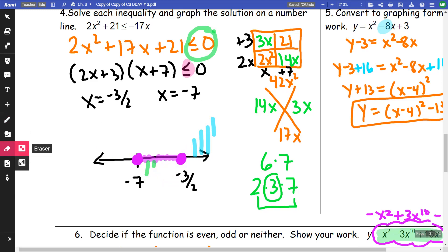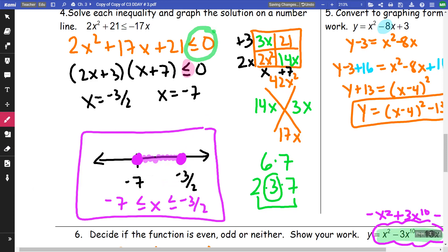Okay. Let me just get rid of that. That was just to help me. This is going to be my graph. My answer is going to be negative 7 less than or equal to x less than or equal to negative 3 halves. So I just want to make that clarification for everyone. Thank you.